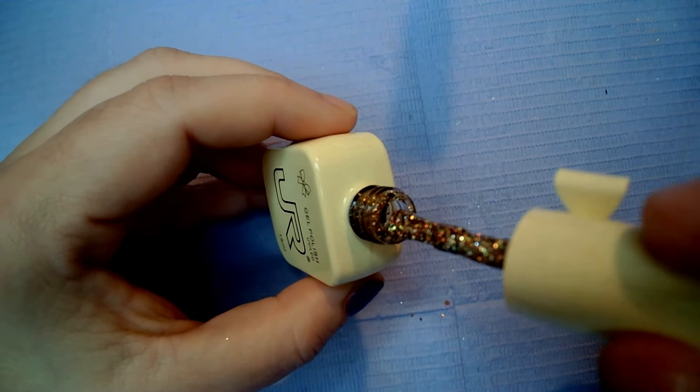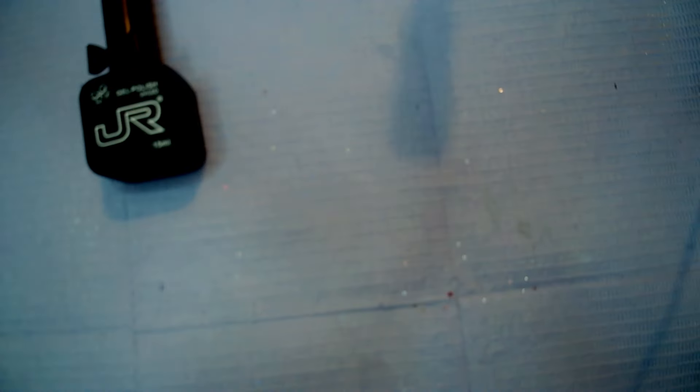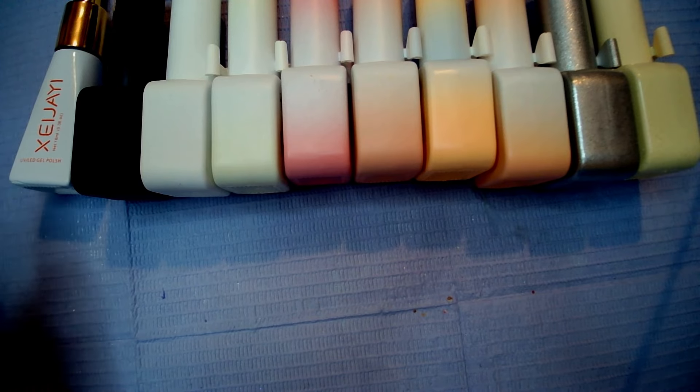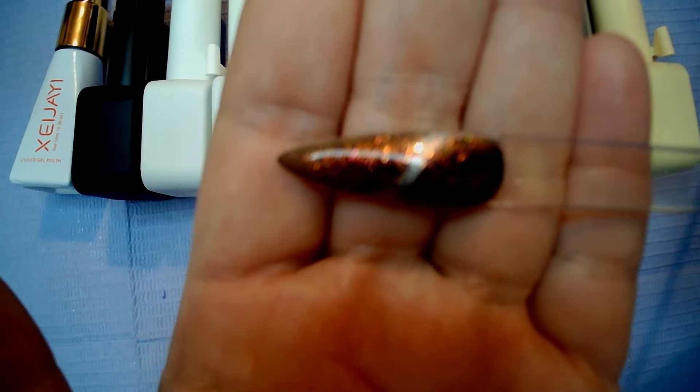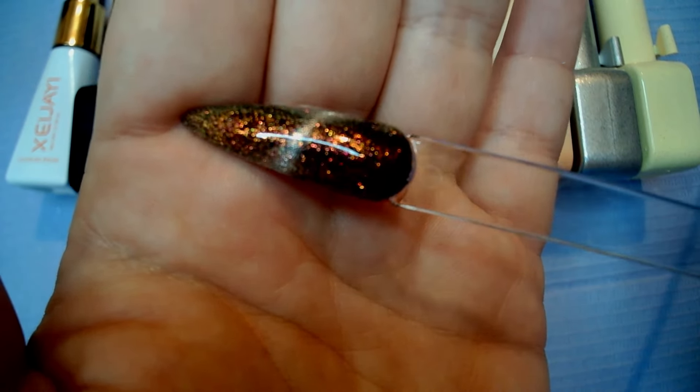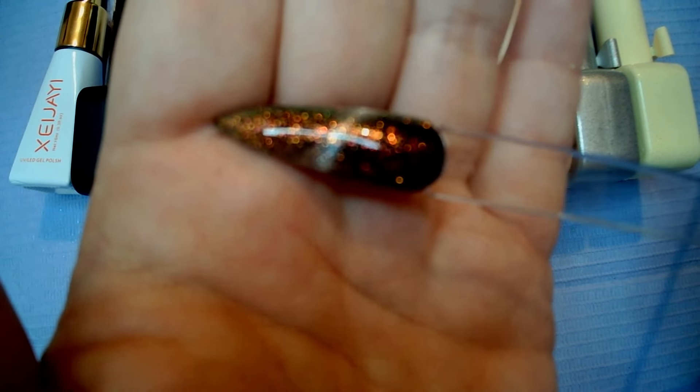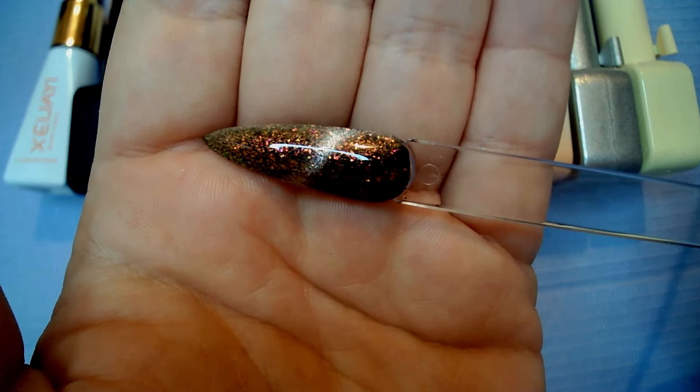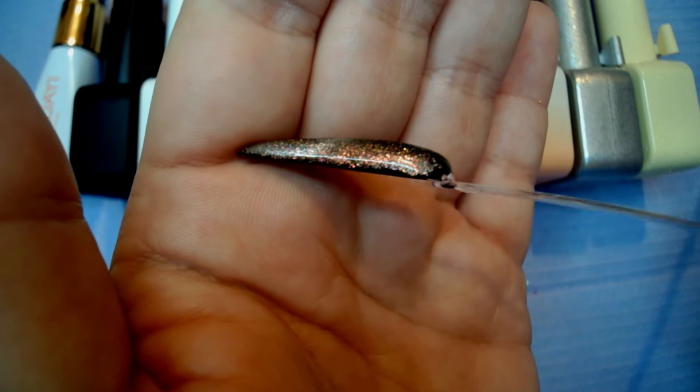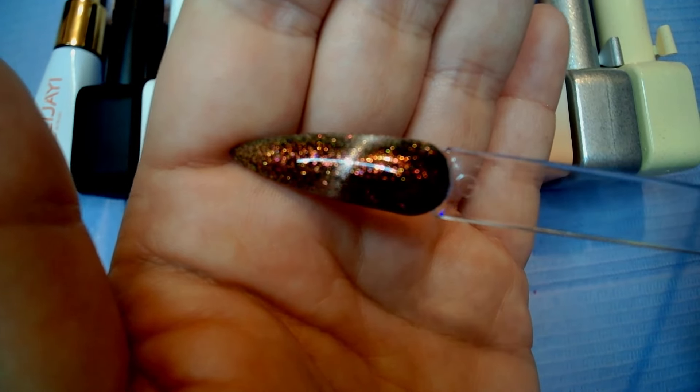So I am just going to swatch these. So starting off with the cat eye. I put it over black and this is what it looks like. Very cool, very nice. I don't have anything with this colour because what I got in my last box it was very purple toned. So yeah, very nice. It went on really well. Yeah, no problems with it. It was lovely.